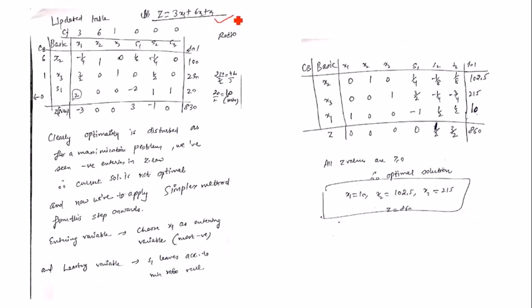Moving to part (b), the cost coefficients are changed again. The new z is 3x1 + 6x2 + x3. Following the same process, the updated zj − cj values are computed. This time we get values of −3 and −1 in the zj − cj row.